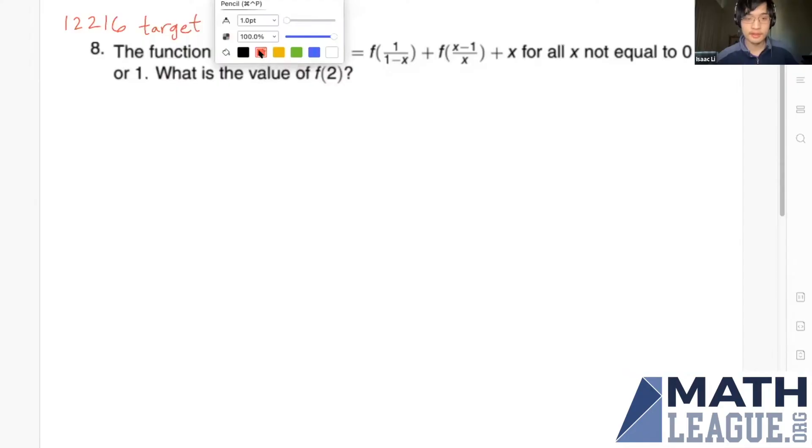This is Isaac, and let me show you how to do the last target problem. Here it is: the function f(x) satisfies f(x) = f(1/(1-x)) + f((x-1)/x) + x for all x not equal to 0 or 1. What is the value of f(2)?